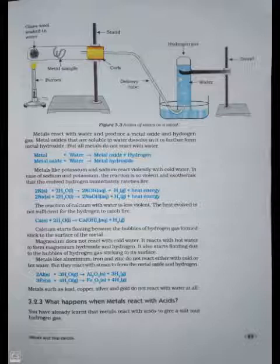Metal plus water equals metal oxide plus hydrogen. Metal oxide plus water equals metal hydroxide. Metals like potassium and sodium react violently with cold water. In case of sodium and potassium, the reaction is so violent and exothermic that the evolved hydrogen immediately catches fire. 2K + 2H2O = 2KOH + H2 + heat energy. 2Na + 2H2O = 2NaOH + H2 + heat energy.